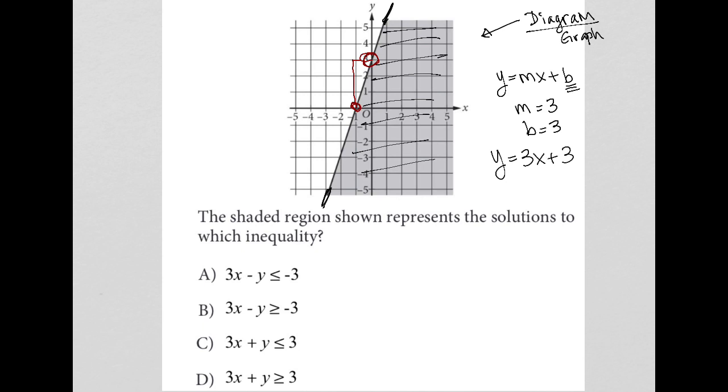And because I'm shading and because I have a solid line, it should be y is greater than—or I'm sorry, y is actually not greater than, it's the exact opposite—y is less than or equal to 3x plus 3.